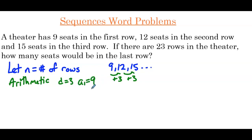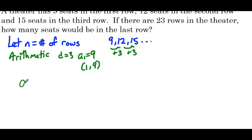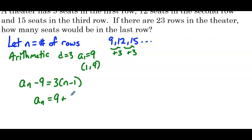Now remember, the explicit formula for an arithmetic sequence looks like point-slope. So we can express a sub 1 equals 9 as the point (1, 9), and then we would have a sub n minus 9 equals 3 times n minus 1. So a sub n equals 9 plus 3 times n minus 1.